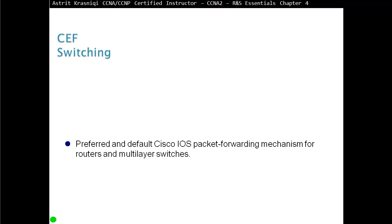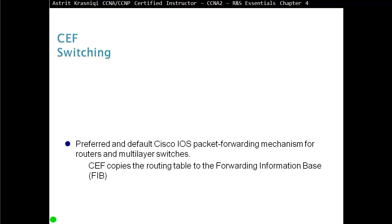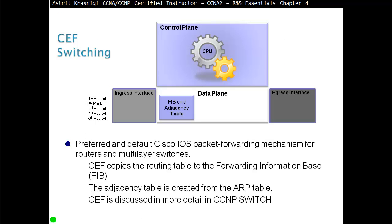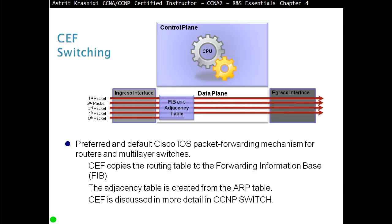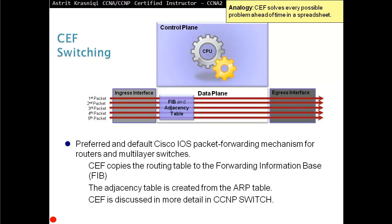The third type is CEF — Cisco Express Forwarding — the preferred and default Cisco IOS packet forwarding mechanism for routers and multi-layer switches. CEF copies the routing table to the Forwarding Information Base (FIB) and creates an adjacency table from the ARP table. The router pre-builds these tables, so packets arriving don't go to the CPU at all — they go directly to the exit interface. The analogy: CEF solves every possible problem ahead of time in a spreadsheet.